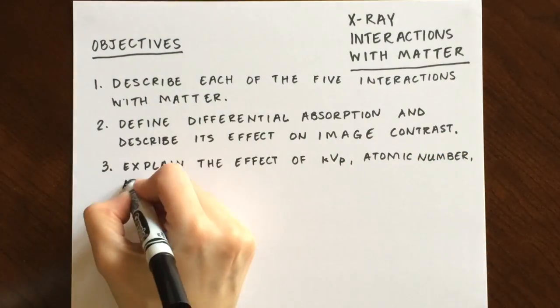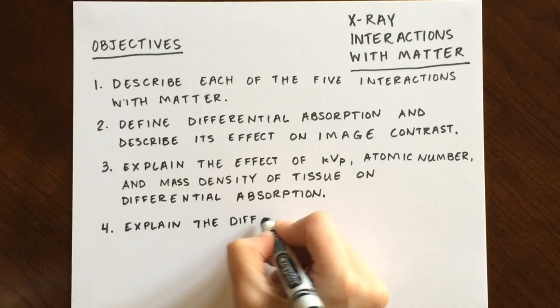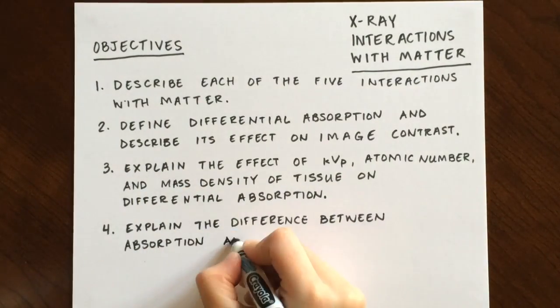Explain the effect of KVP, atomic number, and tissue density on differential absorption, and explain the difference between absorption and attenuation.